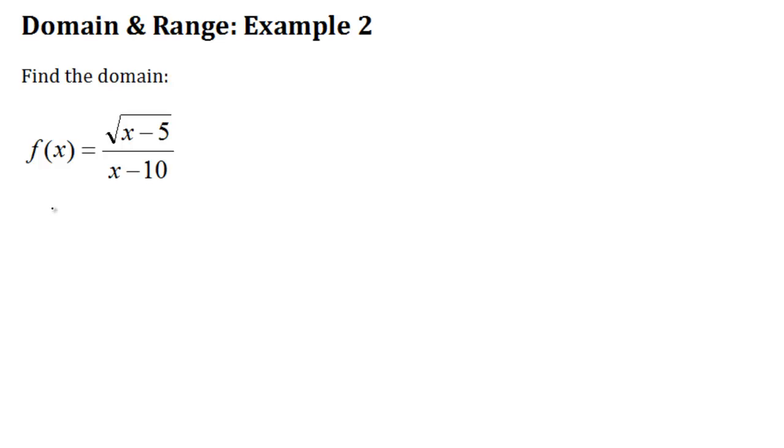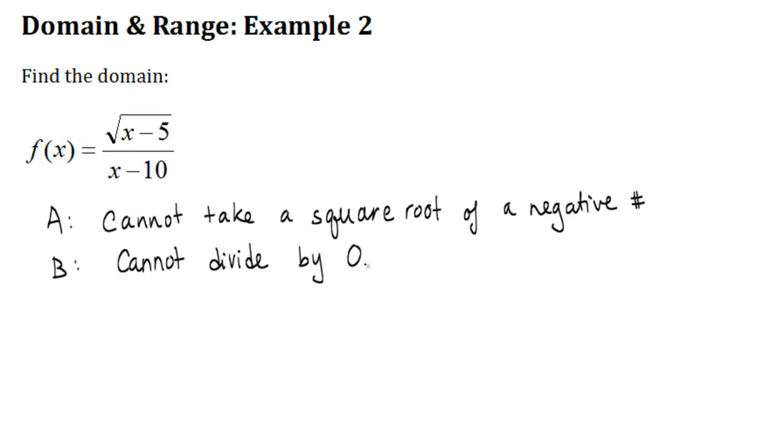In order to find the restrictions on x, the same two rules used in example 1 apply here. These are that you cannot take the root of a negative number and you cannot divide by 0.